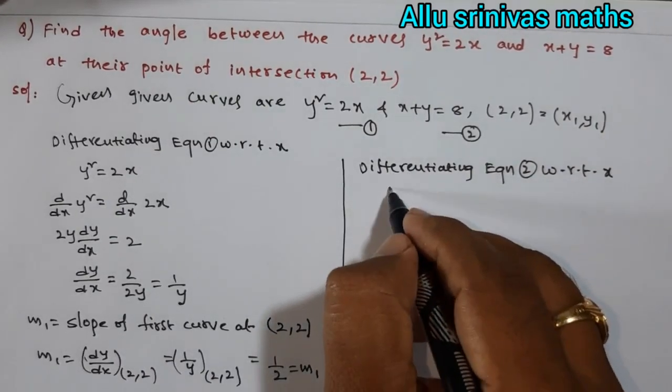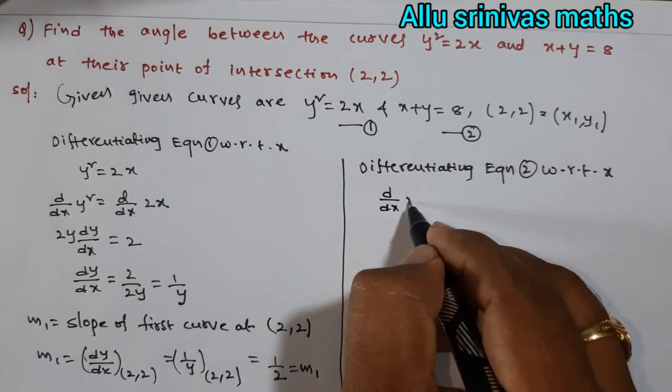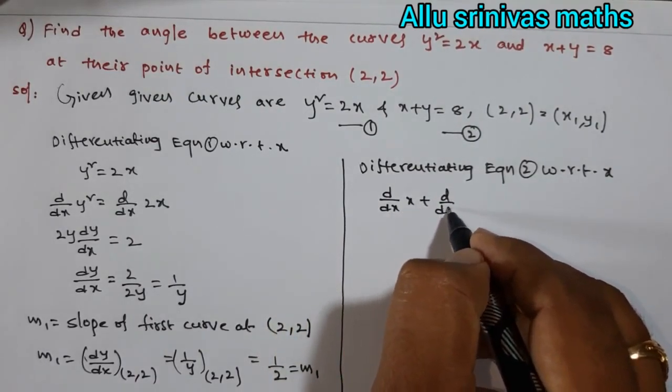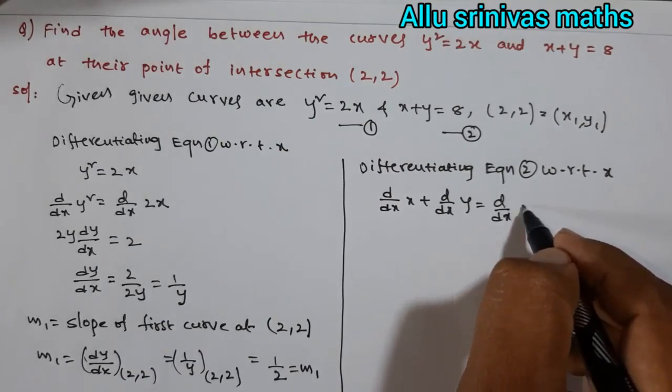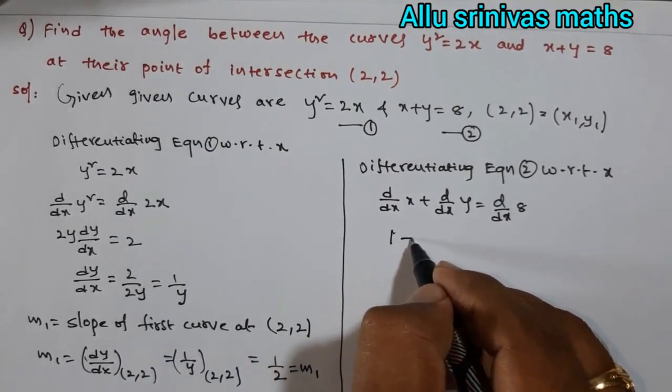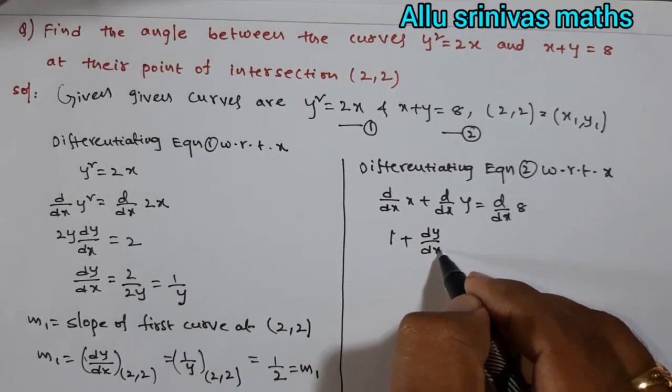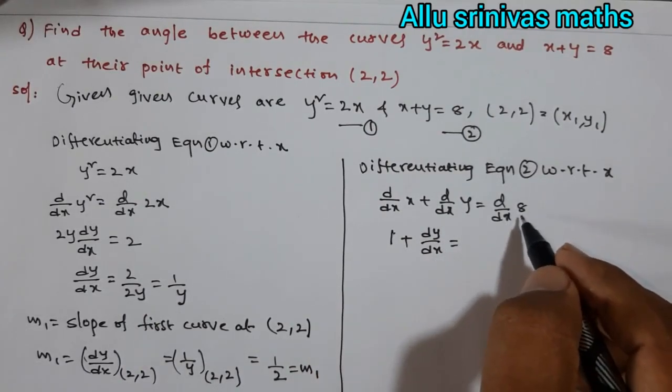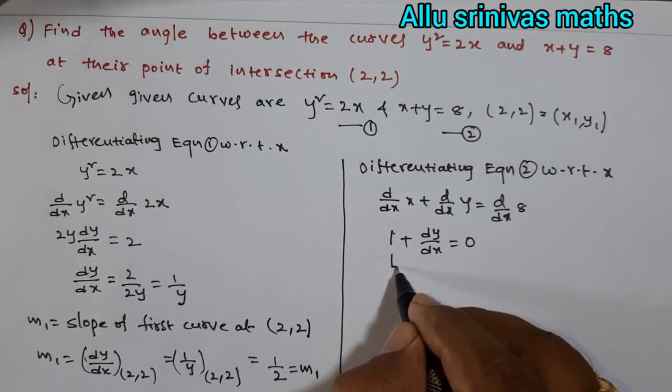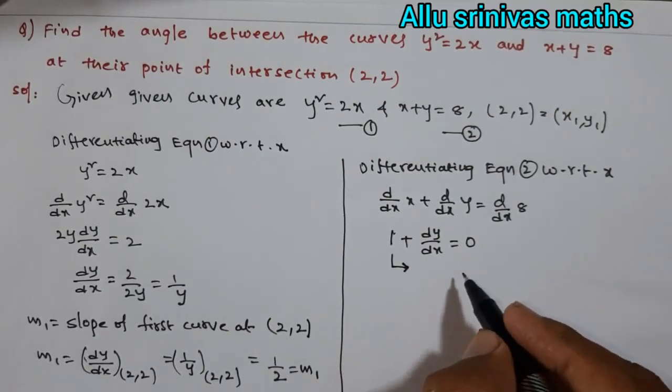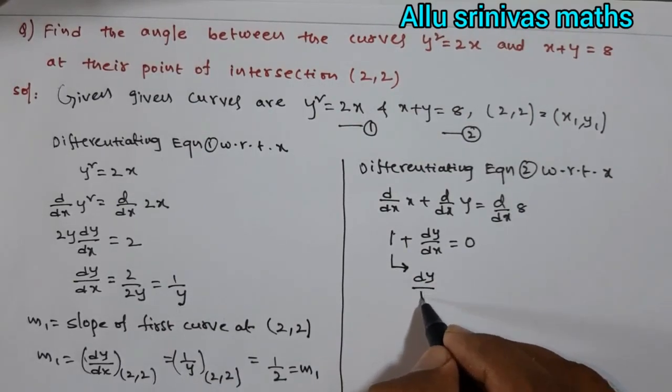We apply the u plus v rule. Derivative of x plus derivative of y equals derivative of 8. Derivative of x is 1, this is dy/dx. 8 is constant, so derivative of constant is 0. Bring 1 to left-hand side, then sign of term is changed, that is minus 1.